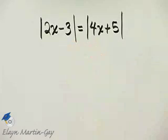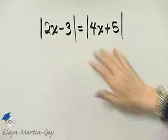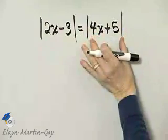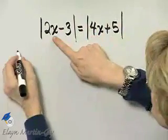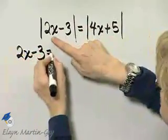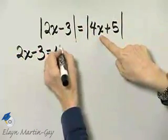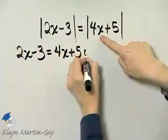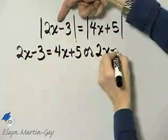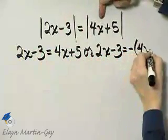Notice we're solving this absolute value equation. We have this absolute value isolated and also this one. For this absolute value to equal this absolute value, either this expression inside, 2x minus 3, must equal this expression within the absolute value bars, 4x plus 5, or this expression within, 2x minus 3, must equal the opposite of the other expression.